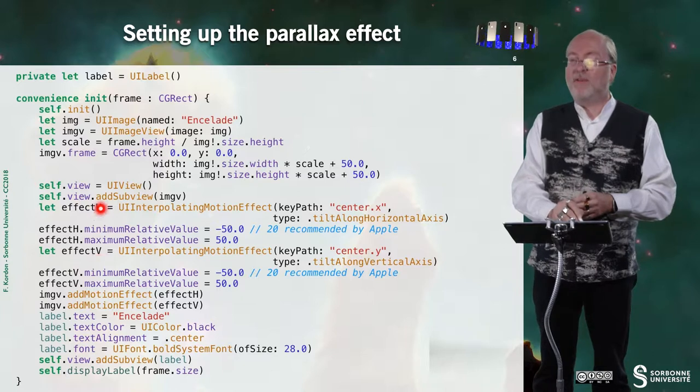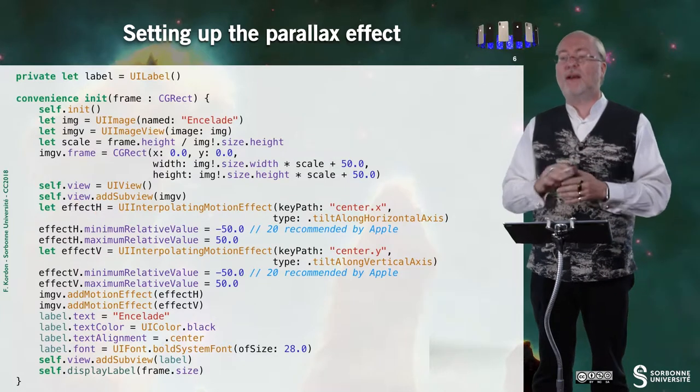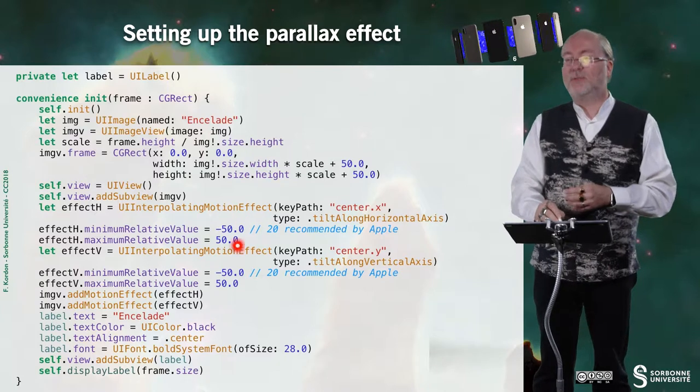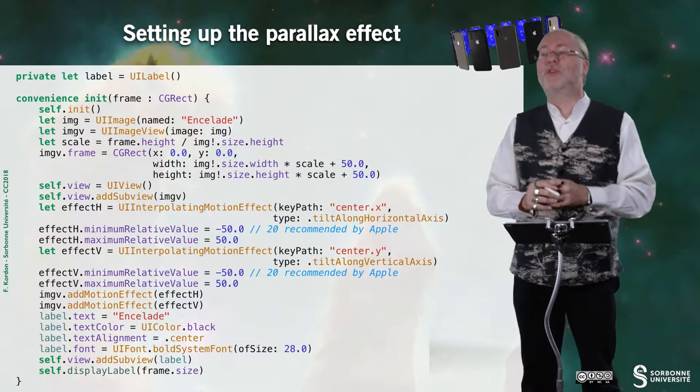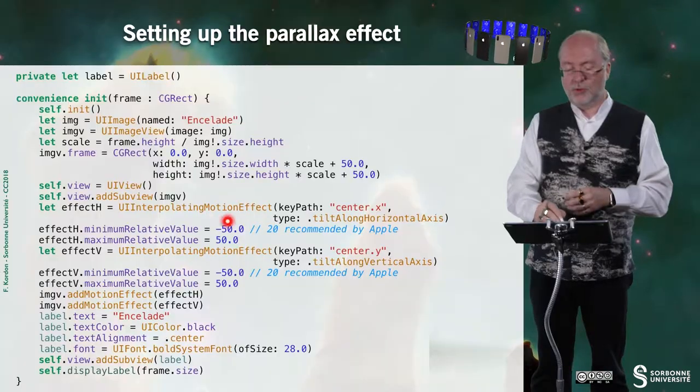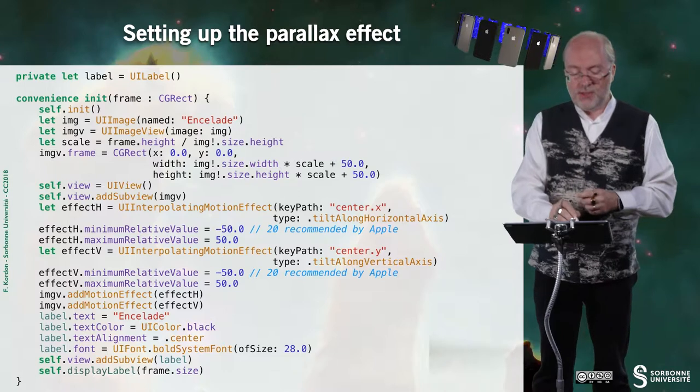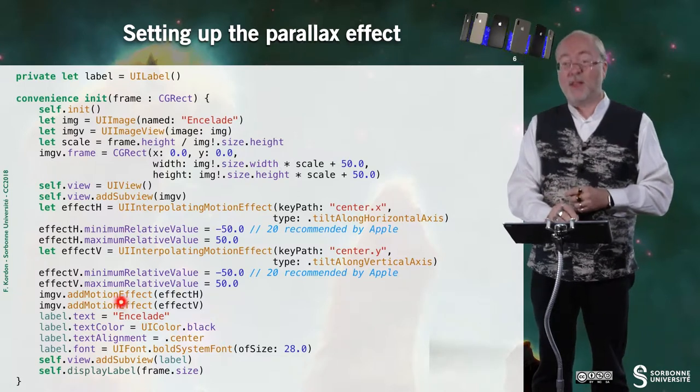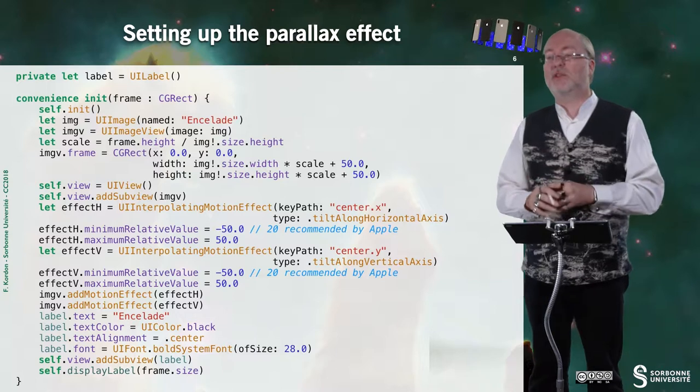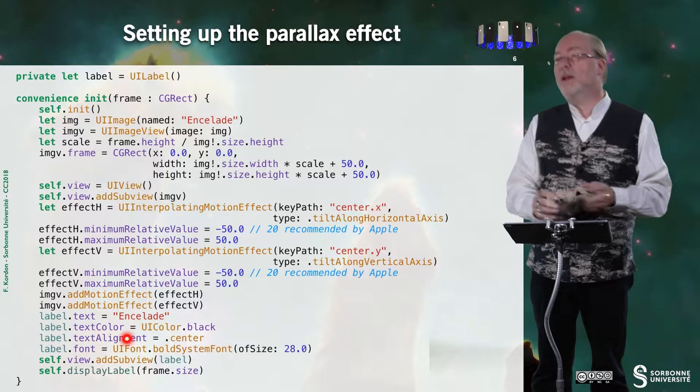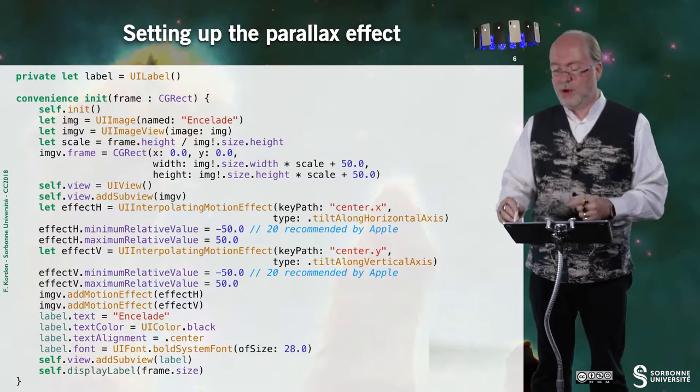And then, I create two effects: a horizontal effect and a vertical effect. Here, I set up. Once again, 20 points is recommended by Apple. Here, I set to 50, so a very large amount. It's even 100 because it's minus 50 and 50. So, this is for the first effect. This is for the second effect. Then, I add this motion effect, thanks to a given method. And then, I create the rest of the view. And you know how to do that.